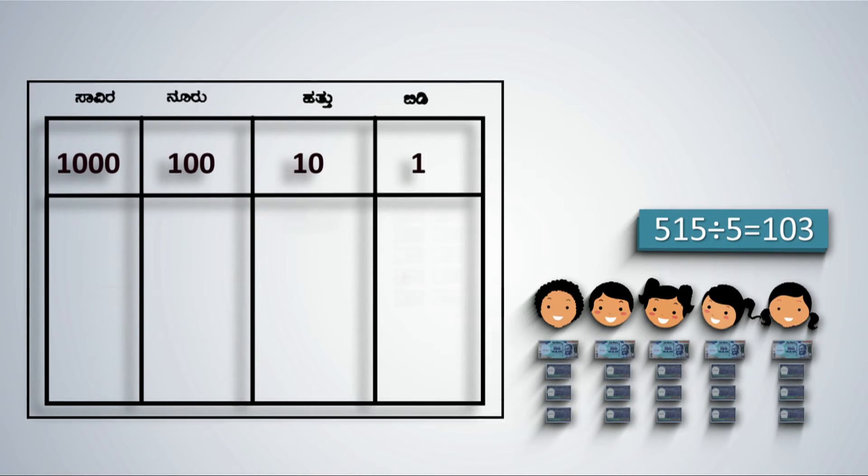Now, all the money is distributed and we are left with nothing. When 515 is divided amongst 5, each gets 1 hundred rupee note, 0 ten rupee notes and 3 one rupee notes, which is 103 rupees.